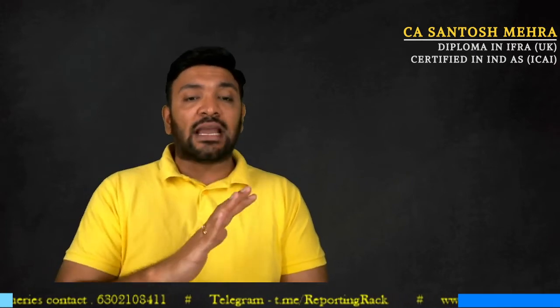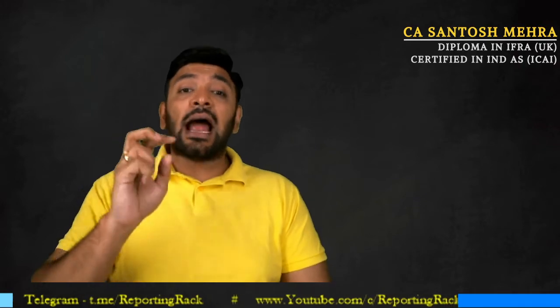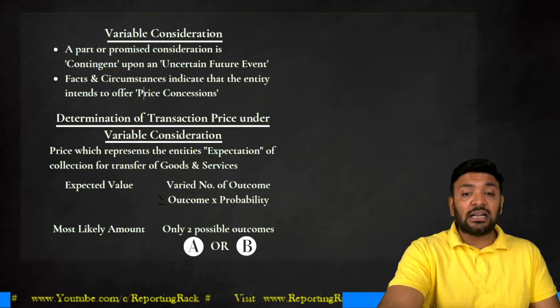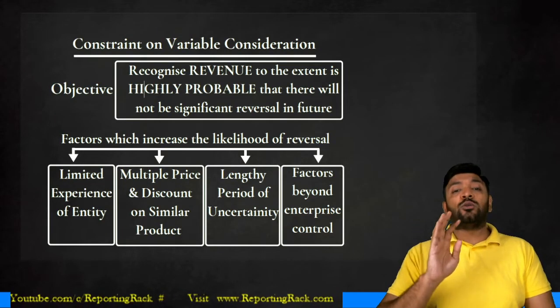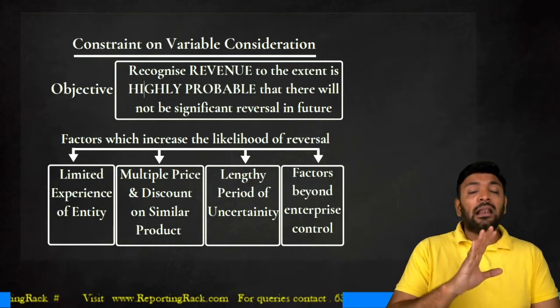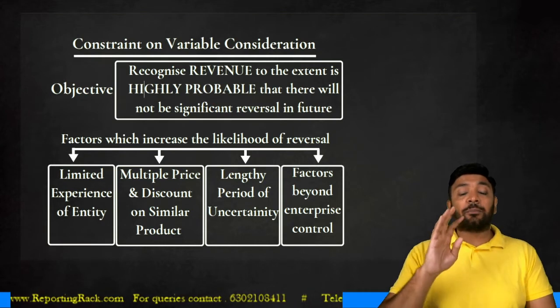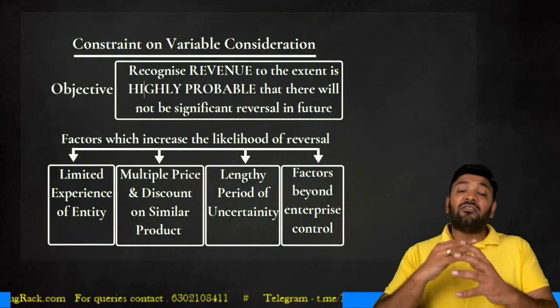Only to the extent it is not highly probable that there will be a reversal of revenue — only to such extent will I recognize revenue based on transaction price. You should not include revenue amounts that are not probable to be received. If I recognize revenue on 110 today, including the bonus, but I'm unable to complete the project within the specified time, I'll have to reverse that additional revenue recognized. Recognize revenue only to the extent it is highly probable that there will not be any significant reversal in future.